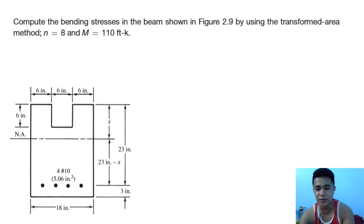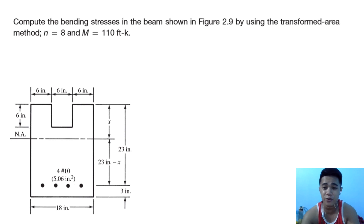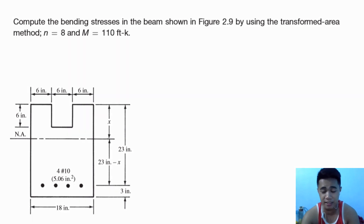Our example: compute the bending stresses in the beam shown, using the transformed area method. Of course it is cracked, so we have to use the transformed area method, considering that n equals 8 and M equals 110 foot-kips.